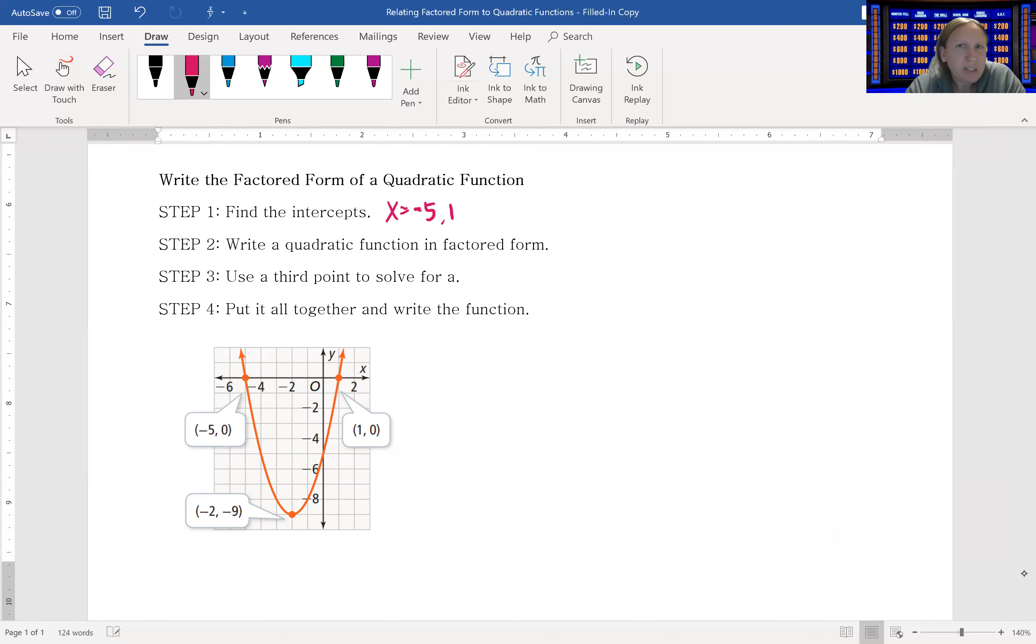Now we're going to kind of work backwards and write that in factored form. So if I know my answers are -5 and 1, that must mean, I'm going to say f(x), it's going to be (x + 5), because if you solved it that would give you the -5, and (x - 1).